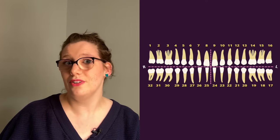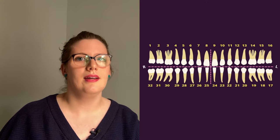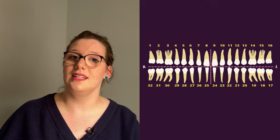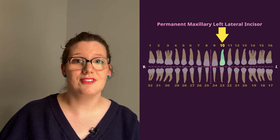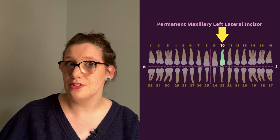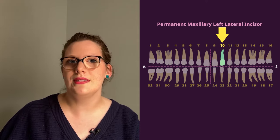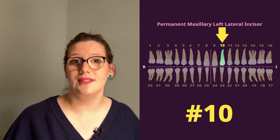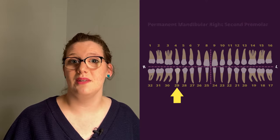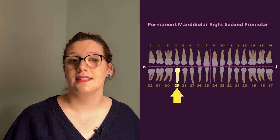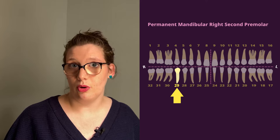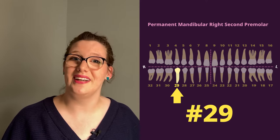Using the Universal Numbering System, you can now use a number instead of five words when you're talking about a tooth. For example, instead of saying 'the permanent maxillary left lateral incisor,' you can say number 10. Or instead of saying 'the permanent mandibular second premolar,' you can say number 29.